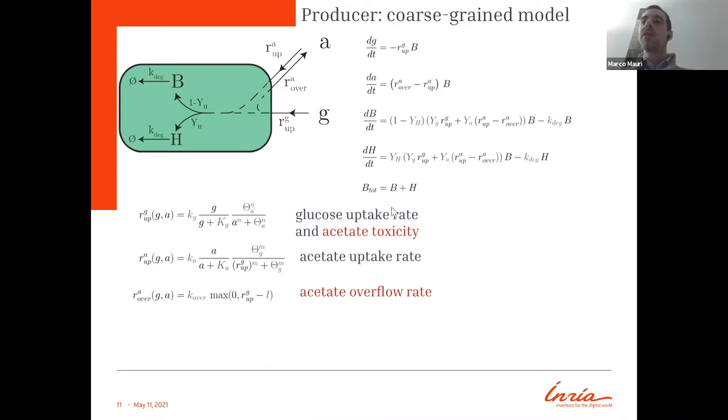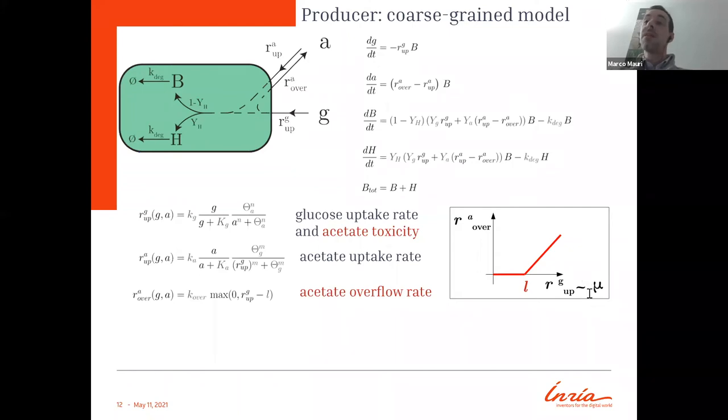We have the glucose uptake rate and the acetate toxicity, the acetate uptake rate, and finally the most important one, the acetate overflow rate. What is important, it will become clear later. Specifically, the acetate overflow doesn't happen at any time point, but only when the growth rate reaches a specific threshold. Before there is no acetate overflow, but from a certain point on, when the growth rate is high enough, acetate starts to be secreted into the environment.